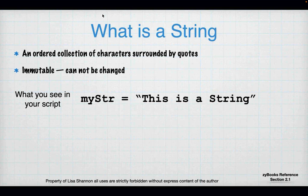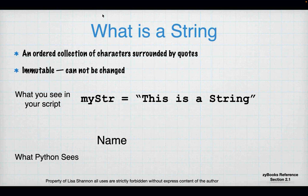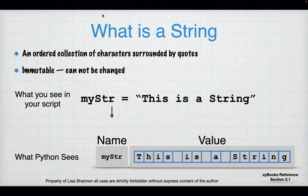Here's a quick example. If you have typed in this line of code — mystr equals quote 'this is a string' end quote — that's what you see. This is what Python sees: Python sees a variable name and a value. We talked about variables and values last week. But the value here is really a series of individual characters, and this becomes apparent in the next slide.